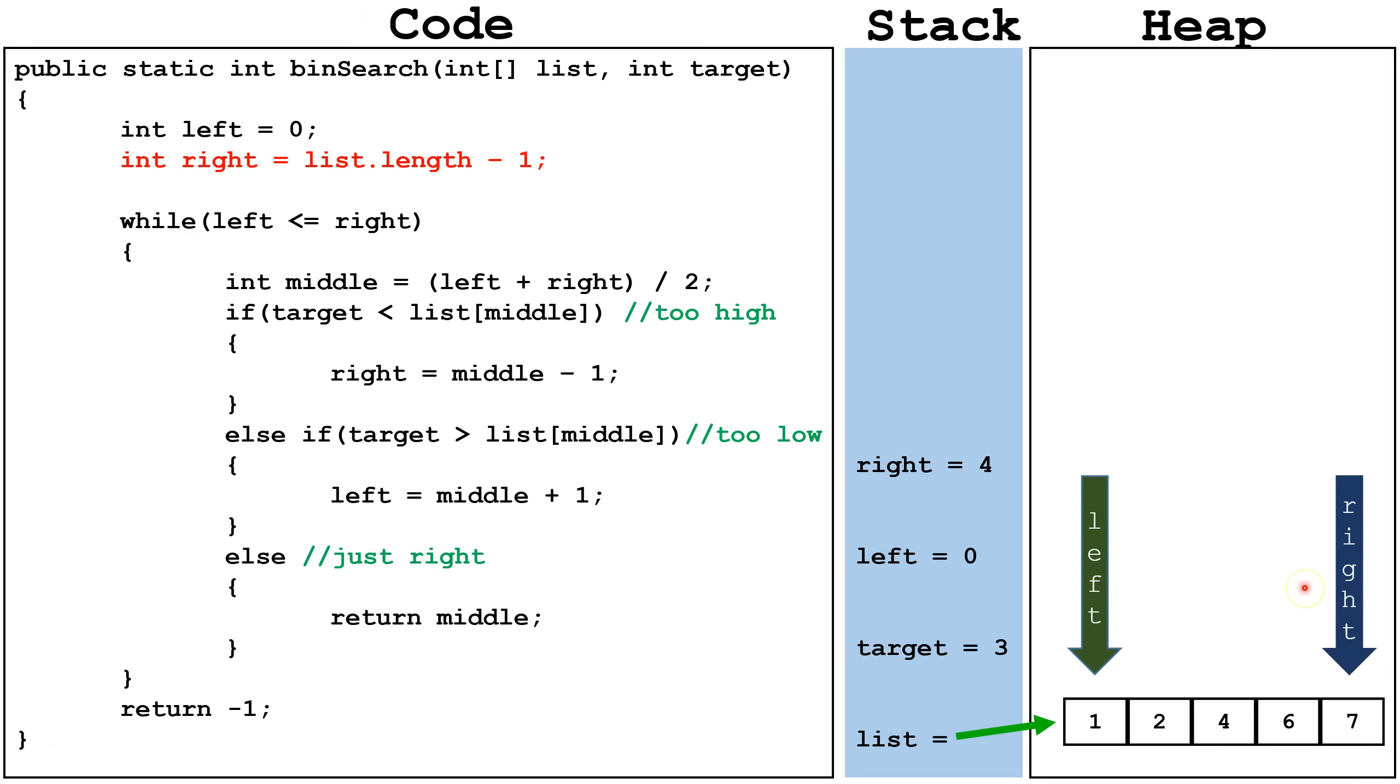The left and right will come closer together until we either find the value or they switch sides. Here we're checking to make sure left is either to the left or on top of right. If the left and the right switch sides, we know we've checked the entire area of our list where our target could be, and we know it must not be there.